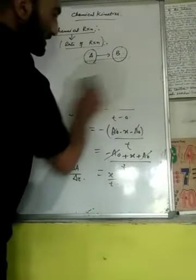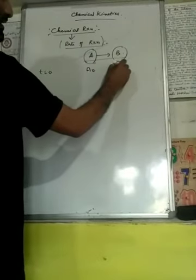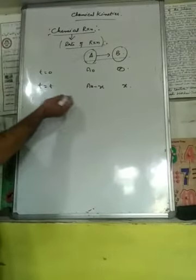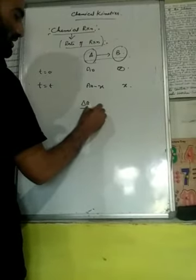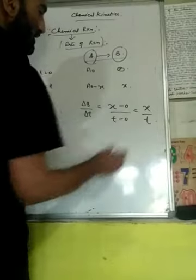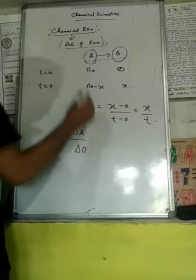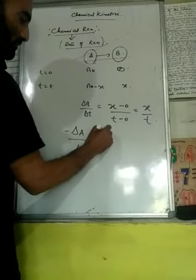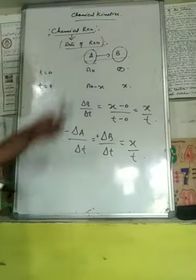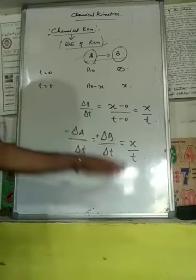Now with respect to B: at time T equal to zero, B-naught equals zero. At time T, B-T equals x. So delta B divided by delta T equals x minus 0 divided by T minus 0, which equals x by T. Therefore, minus delta A divided by delta T equals delta B divided by delta T, both equal to x by T.